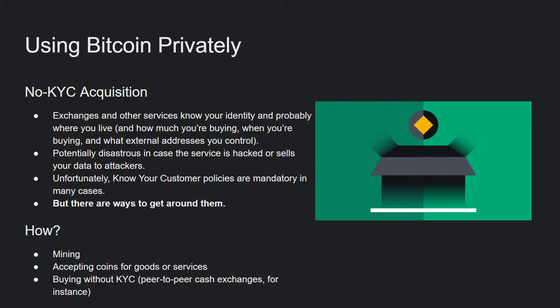If that level of risk is unacceptable to you, there are alternative ways of obtaining coins. The first is mining — by dedicating electricity and hardware to secure the network, you can earn a block reward. Nowadays it's more common to work in mining pools, combining hash power and splitting the reward. You could also accept Bitcoin for goods and services — if you run an e-commerce store or consultancy, you could take it as payment, sidestepping any middlemen. And of course, there are peer-to-peer transactions, where you match with someone looking to sell Bitcoin for cash, meet up, they send you the coins, you hand them cash, and everybody's happy.